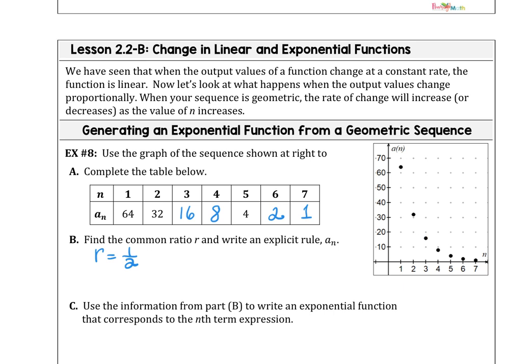Find the common ratio and write that explicit rule. We're talking about geometric rules. A sub n is our first term, 64, and our proportional factor, 1 half, and to the n minus 1 power.